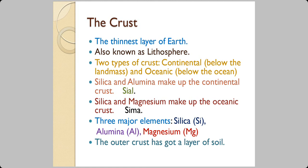When we look at the composition of the continental crust, it is mainly made up of silica and alumina. In the oceanic crust, the major elements are silica and magnesium, so we call it sima. In sima, Si comes from silica and Ma comes from magnesium.